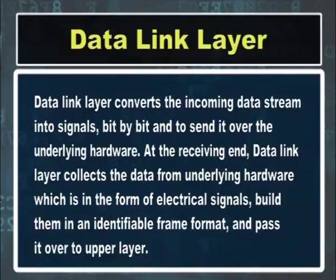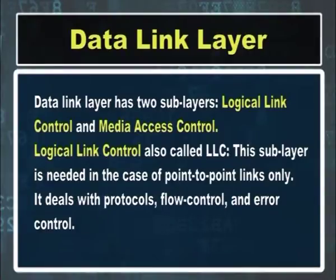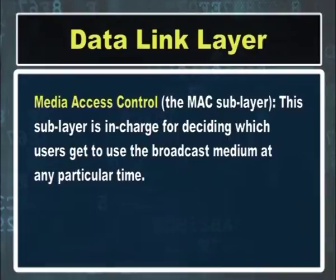Data link layer converts the incoming data stream into signals bit by bit and sends it over the underlying hardware. At the receiving end, the data link layer collects the data from the underlying hardware, which is in the form of electrical signals, builds them in an identifiable frame format and passes it over to the upper layer. Data link layer has two sub-layers: logical link control and media access control. The LLC sub-layer is needed in the case of point-to-point links only and deals with protocols, flow control and error control. The MAC sub-layer is in charge of deciding which users get to use the broadcast medium at any particular time.